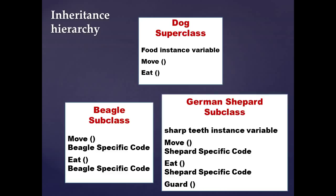We can always add more methods and instance variables that are unique only to the subclass. For example, in the German shepherd subclass I added a guard method, because German shepherds can be guard dogs. We don't think of beagles as guard dogs, so that's not a method we would put in the dog superclass — we add it into the German shepherd subclass only.